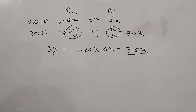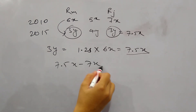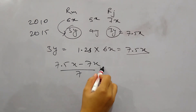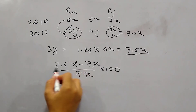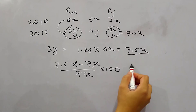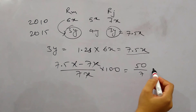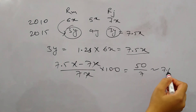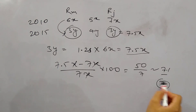We need to find out the percentage change. The increase in Rajesh's salary is (7.5x − 7x) / 7x × 100. The x cancels, giving 0.5/7 × 100 = 50/7, which is approximately 7.14. But since the question asks for the closest answer, the answer is 7. I hope this is clear.